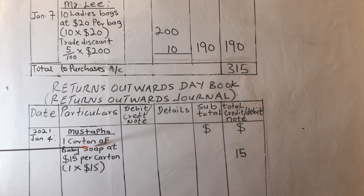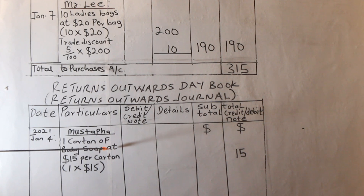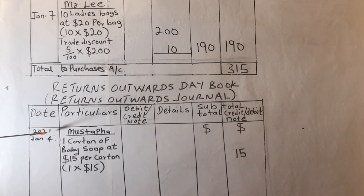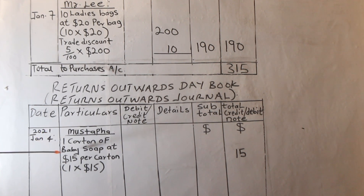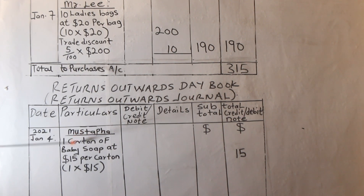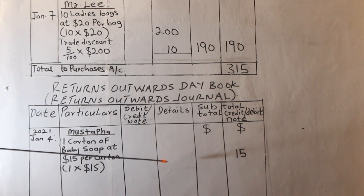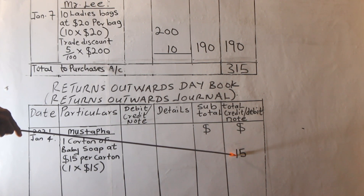We returned one carton of baby soap to Mustafa, and from our previous illustration on credit purchases, we know that one carton of baby soap costs $15. So we analyze it this way: assuming the date is January 4th, 2021, we write down the name of the supplier. What we returned is one carton of baby soap at $15 per carton — that is one carton times $15, which gives us $15. We take it straight to the total credit or debit note column.